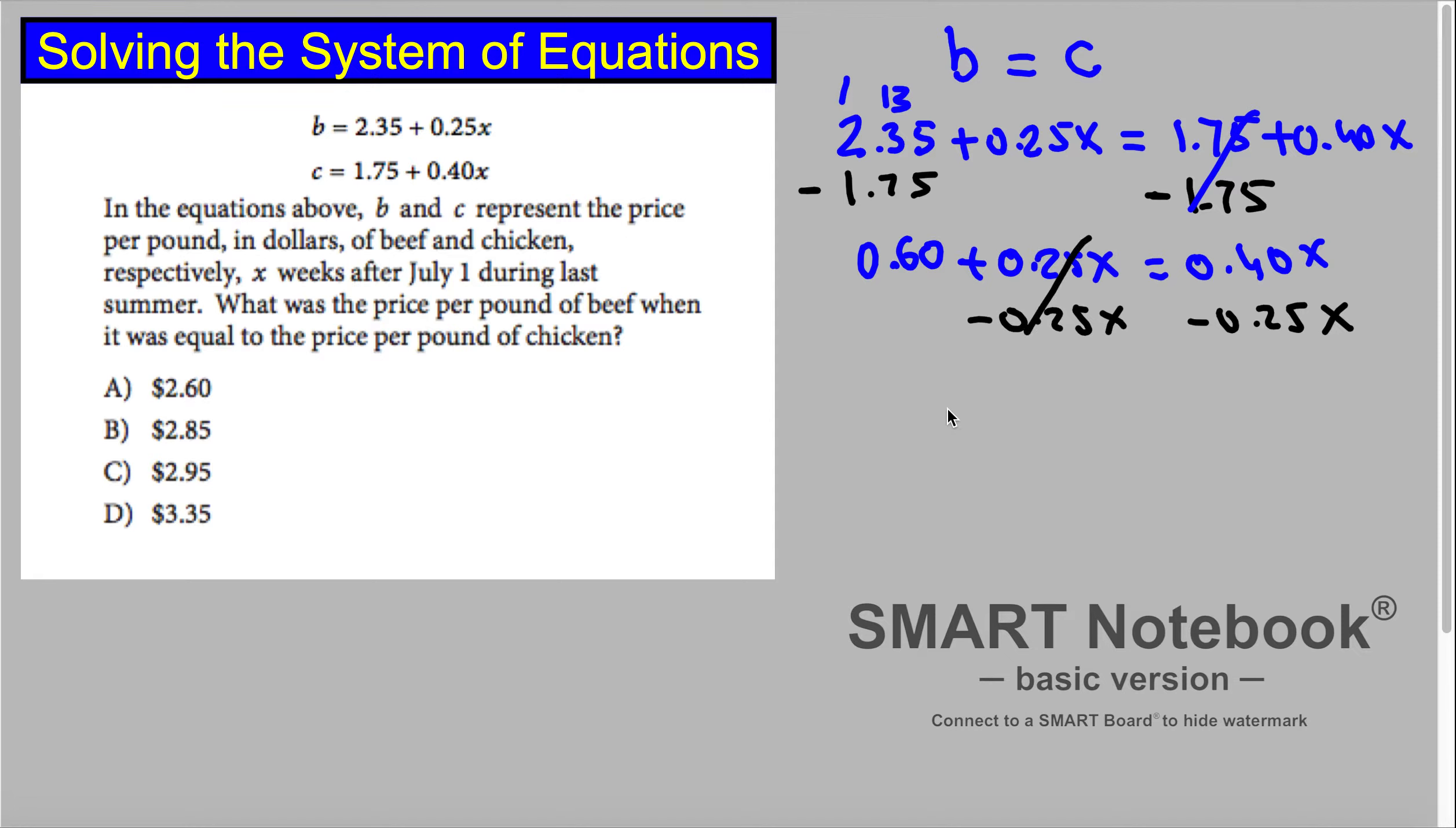So this cancels and we have 0.60 is equal to, here is x, and 4 minus 25 is 15. So it's 0.15x. So that's what we have here.